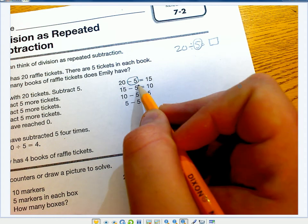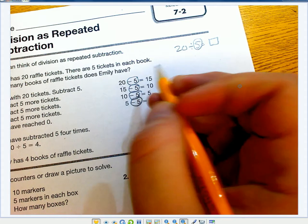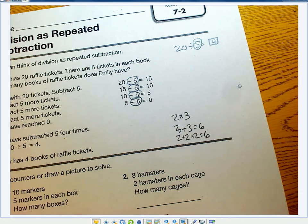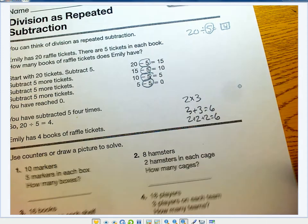So there's 1, 2, 3, 4. Since I had to subtract 5 four times, my answer for this problem is 4. So 20 divided by 5 equals 4.